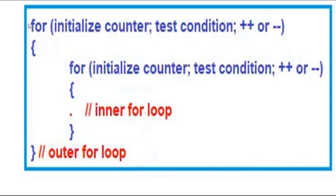Hello everyone. In this video we will discuss about nested for loop in C programming. A loop within another loop is called a nested loop. Nested loop means a loop statement inside another loop statement. That's why nested loops are also called loop inside loop.